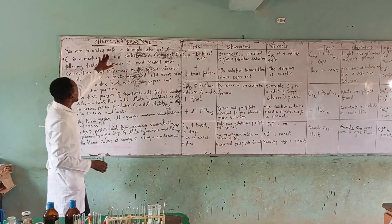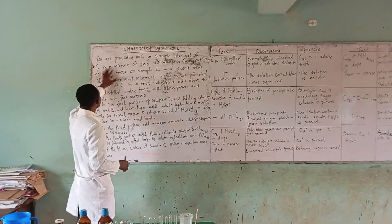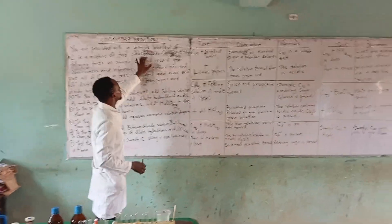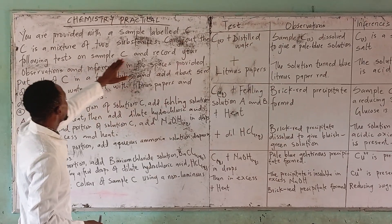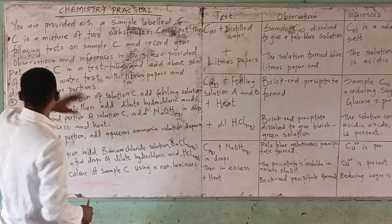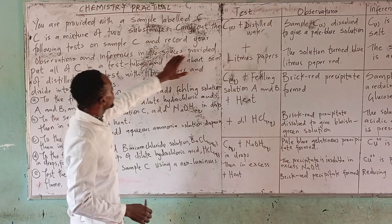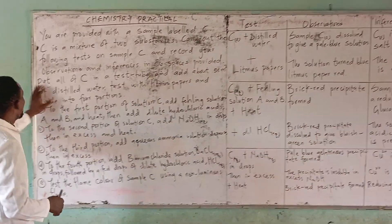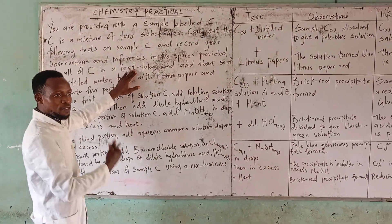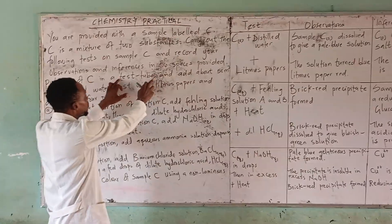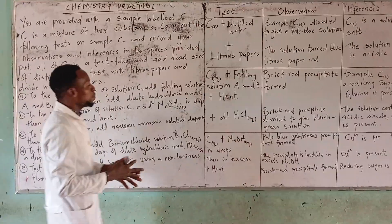This is the question: you are provided with a sample labeled C. C is a mixture of two substances. Find out the following tests of sample C and record your observations and inferences in the spaces provided. Put all of C in the test tube and add about 5 cm³ of water.